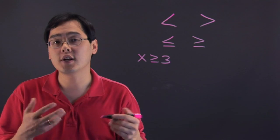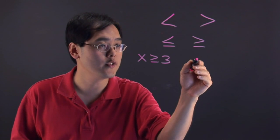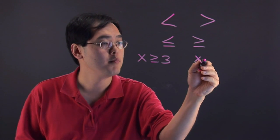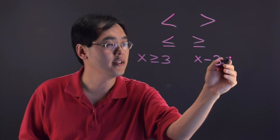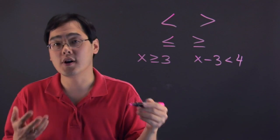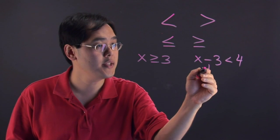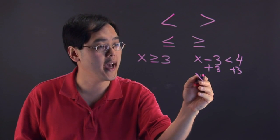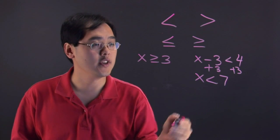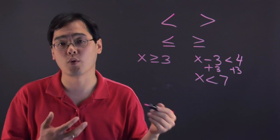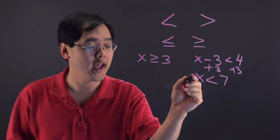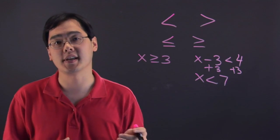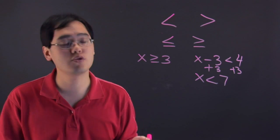You might see inequalities used as part of equations. For example, you might have x minus 3 less than 4. To solve for that, you would add 3 to both sides. So your final inequality would be x less than 7. That means the solution for this inequality would be numbers for x that are strictly less than 7, things like 6.99, 2, 0.